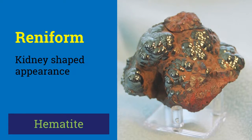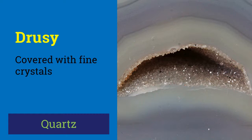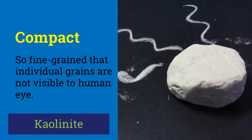Hematite and other kidney-shaped minerals are described as reniform. Minerals having their surfaces covered with fine crystals are called druzy, and druzy quartz is one such example. A specimen is said to be compact if it is so fine-grained that individual crystals are not obvious to the human eye. Kaolinite shows this habit.